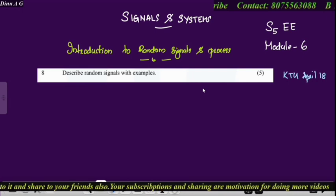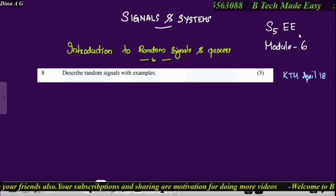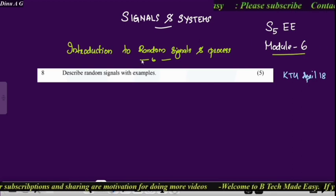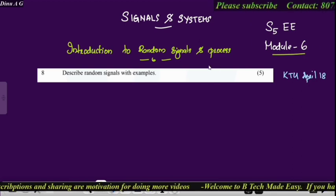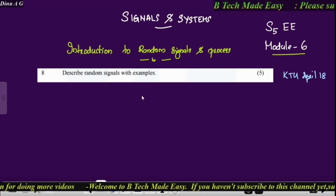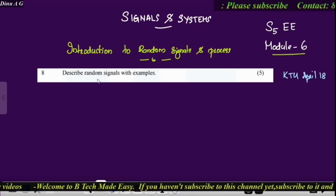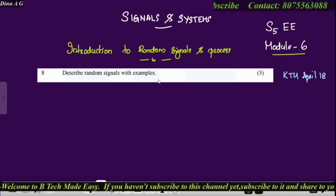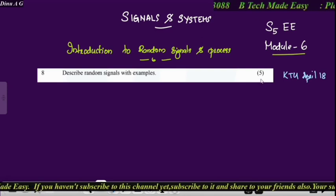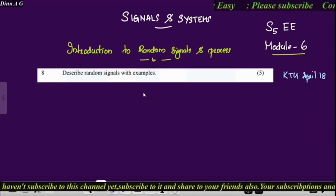Hi all, welcome to B.Tech Made Easy. In our Signals and Systems S5, this is module 6 where the topic is an introduction to random signals and processes. In this session we will discuss previous questions and topics, describing random signals with exam questions, short questions, and five-mark questions. We will start with signal classification.